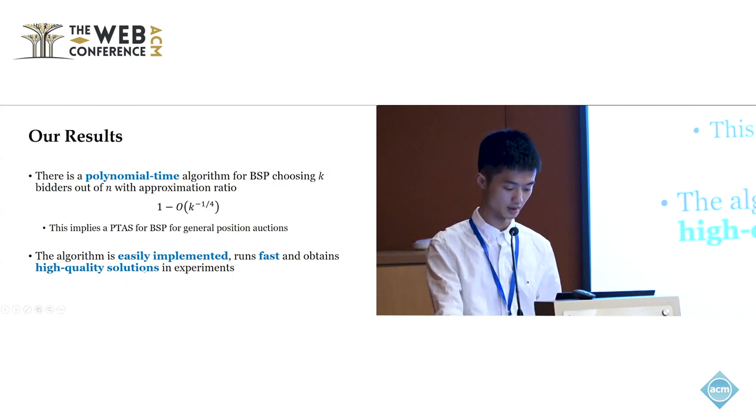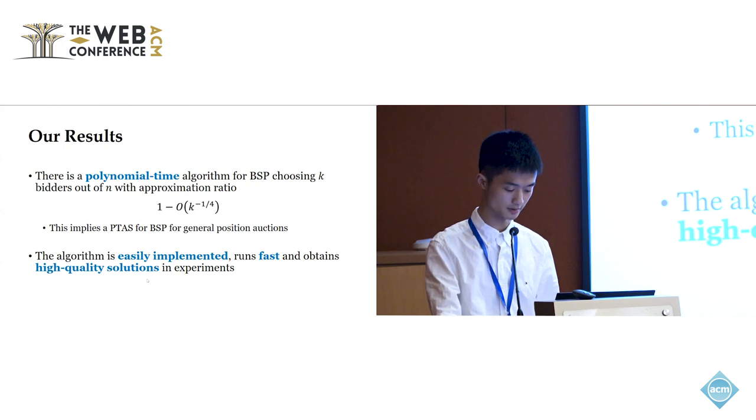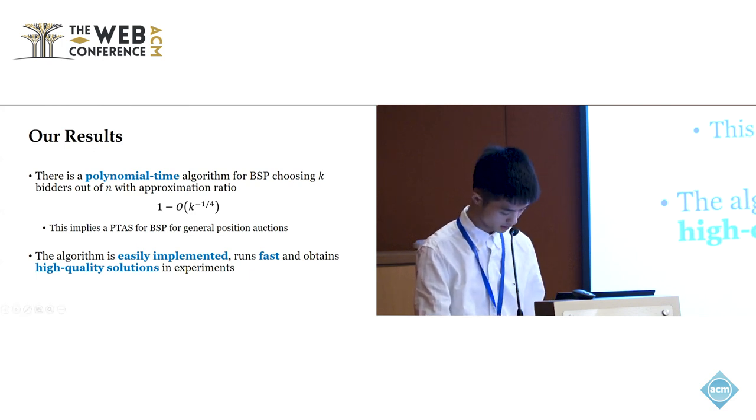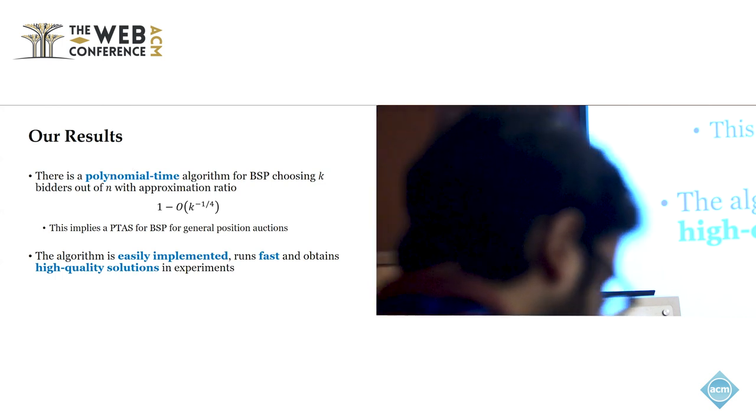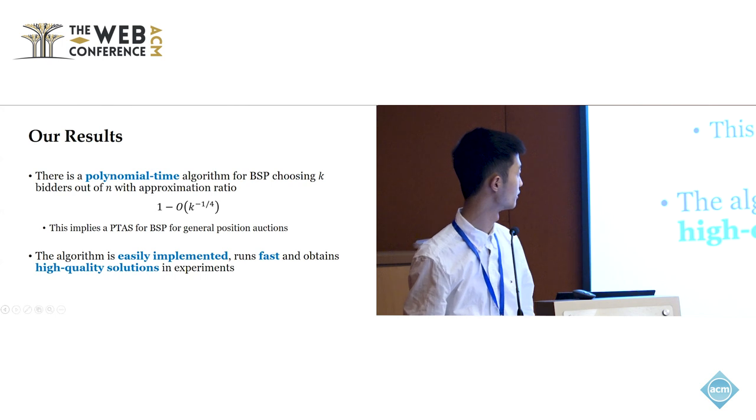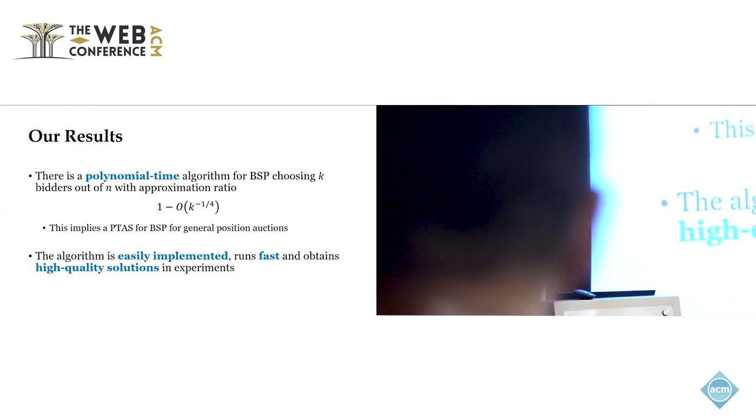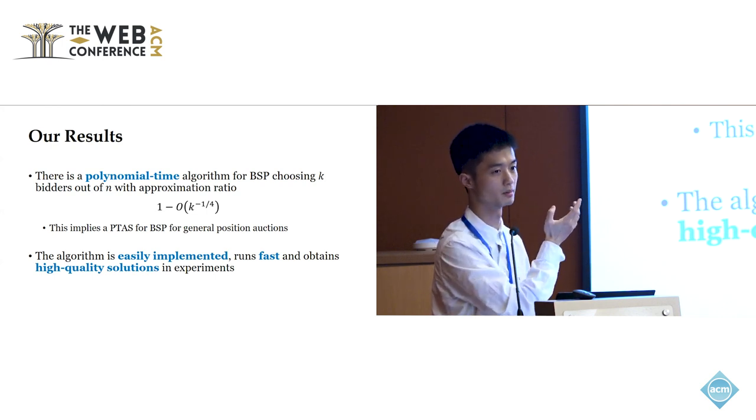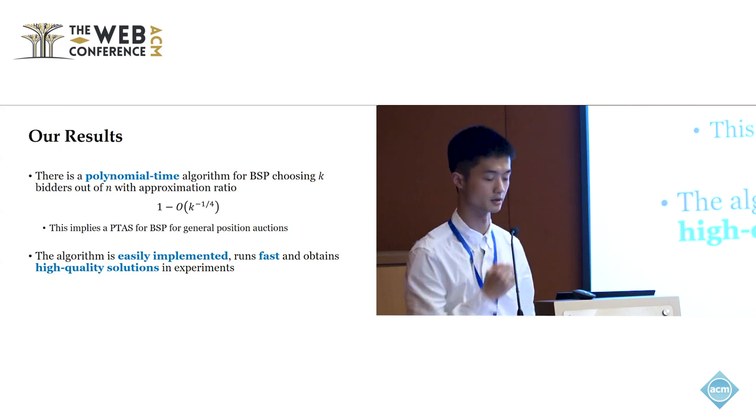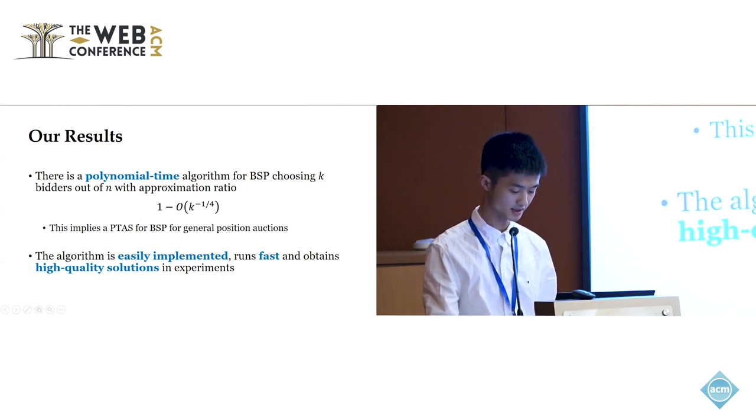Our work takes a different approach than the prior ones. With this approach, we are able to derive a polynomial time algorithm for the bidder selection problem in general position auctions with this approximation ratio, 1 minus k to the minus 1 over 4. Coupled with a straightforward brute force algorithm, this implies a PTAS for the bidder selection problem in position auctions. Let me take a few seconds to interpret this formula. As the parameter k grows, where parameter k is the number of bidders you select, this approximation ratio becomes 1. Which means that as the problem scales up, this problem becomes easy. And when the problem scale is small, you can simply run a brute force to get an accurate answer to the problem. Moreover, this algorithm is easily implemented. In our experiments, it runs fast and obtains high quality solutions.